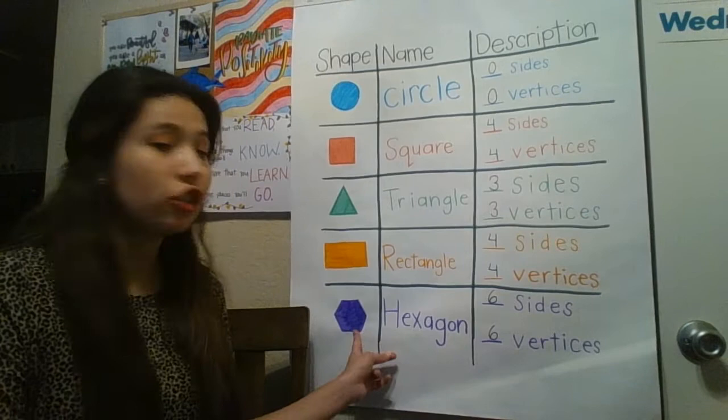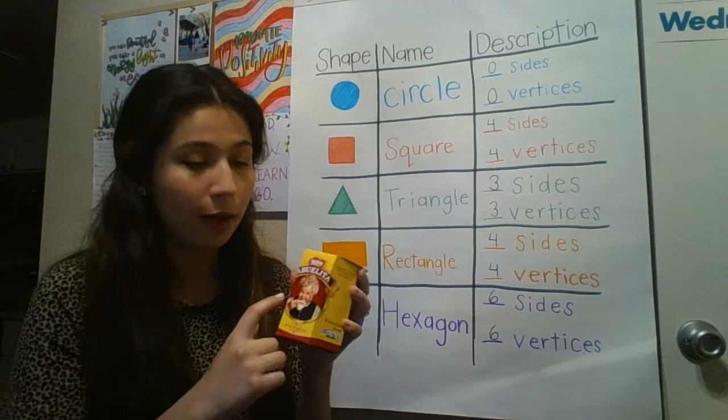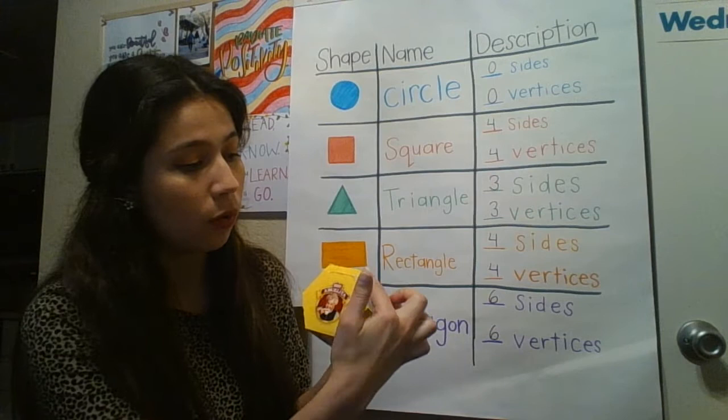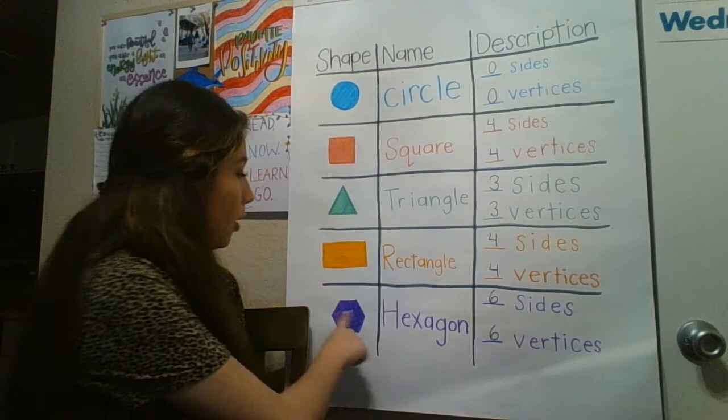Our last shape is a hexagon. It was actually kind of hard for me to find something shaped like a hexagon, but I did find something. This is one of my favorite hot chocolates — it's called Abuelita Hot Chocolate. When I flip it over, you can actually see that the top is a hexagon. Let's make sure — let's count the sides: one, two, three, four, five, and six. Now let's count the vertices: one, two, three, four, five, six. I know it's a hexagon because it has six sides and six vertices.